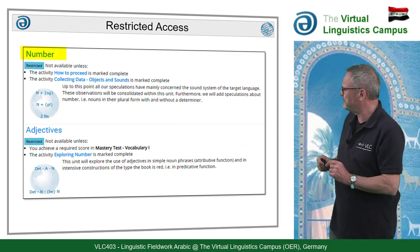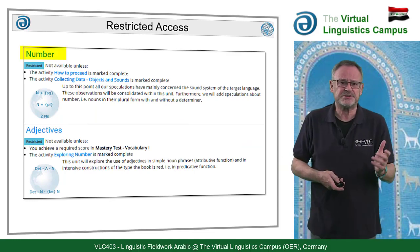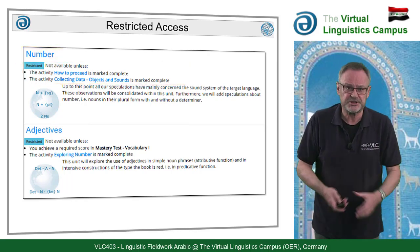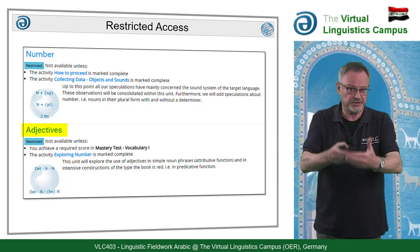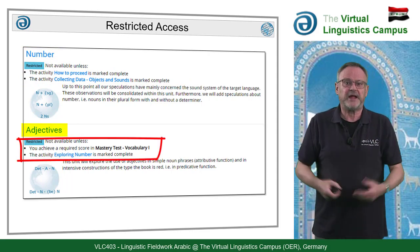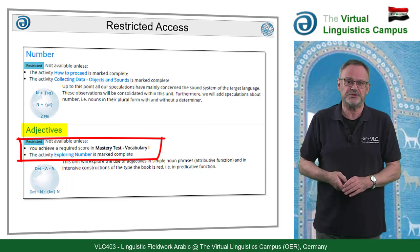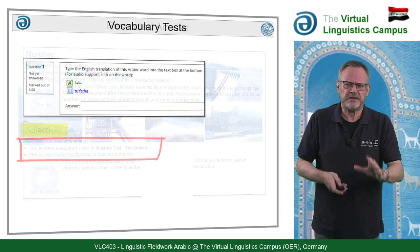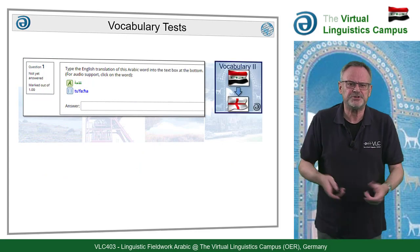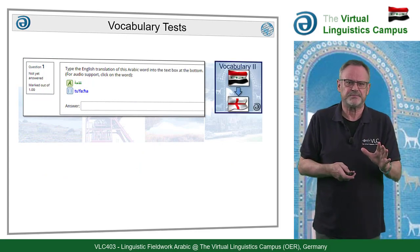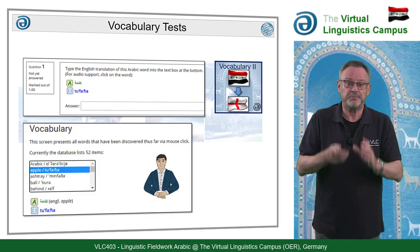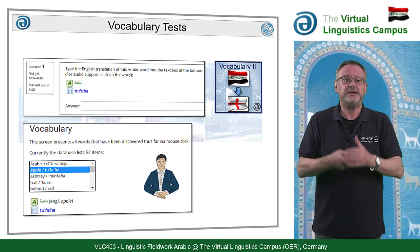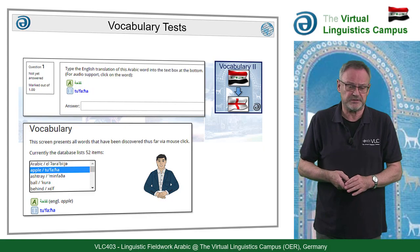For example, the unit on number can only be accessed if two previous activities are completed, and the subsequent unit on adjectives is only available if vocabulary test one is passed successfully, and the exploration activity of the previous unit was marked as successful. But don't worry — each vocabulary mastery test, where you can earn a digital badge, is easy to manage. In each unit, you find the complete list of vocabulary items that have been collected up to that point, enabling you to practice and prepare yourself for the test.